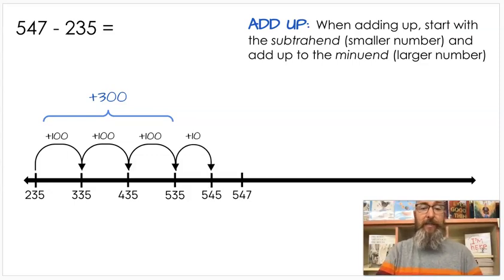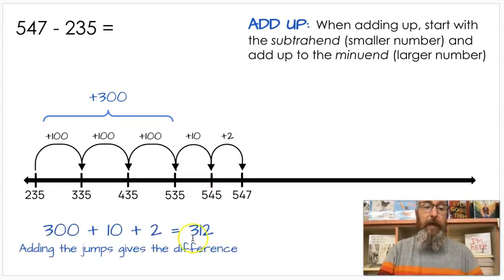Next, we're going to start adding our tens. 535 plus 10 is 545. Can't add any more tens because then I get too big. And then I go from 545 to 547 is 2. Now we have to add our jumps and that's going to give us the difference. We have 300 plus 10 plus 2, which makes 312. When you add the jumps we made, it gives you the difference, which is the answer to a subtraction question.